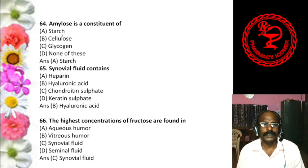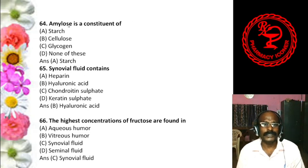Question 18: Amino sugars (hexosamines) are not considered in which of the following? Options: A. Hyaluronic acid, B. Chondroitin sulfate, C. Erythromycin and carbomycin, D. Streptomycin. The answer is streptomycin — streptomycin does not contain amino sugar.